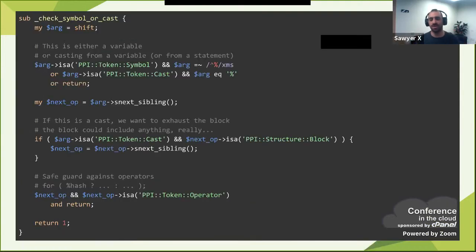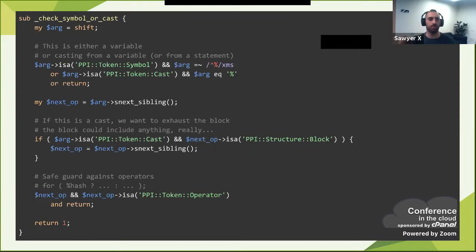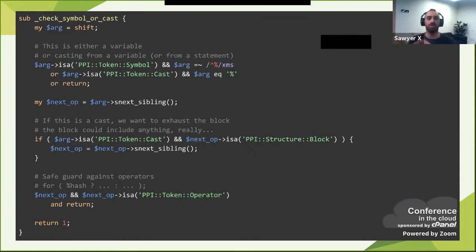I called this function 'check if it's a symbol or a cast' — because PPI doesn't tell me which one it is, and when it tries to it could get it wrong. So I actually wrote custom code: take this argument, if it's a symbol and begins with a percent, or it is a cast but is definitely only a percent — then okay, continue. Otherwise, stop. Then get the next significant sibling, check if that is a cast, and if the one after that is a block, then the one after that is the next significant. I'm not sure how this works, to be honest.